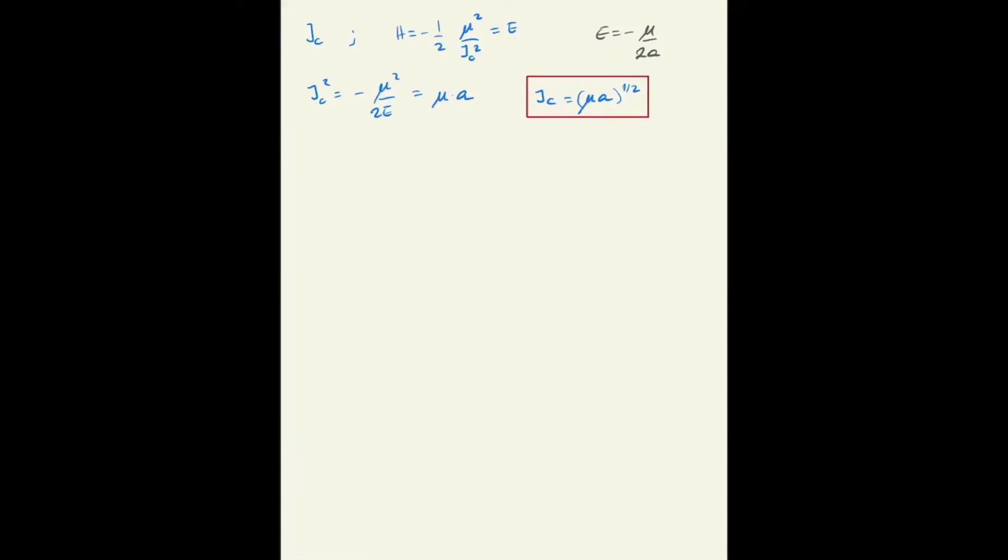Let's again use the generating function, and Jc appears only in the energy, so the only place where it appears is the last integral. We can therefore write omega c is equal to the derivative of the generating function with respect to Jc. So it's only the last integral that we need to care about.